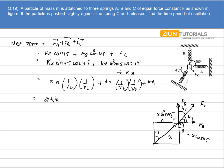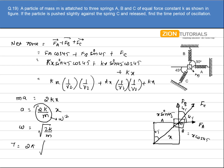This net force equals mass times acceleration, so acceleration = (2K/M) · x. Since acceleration is directly proportional to x, the coefficient of x equals ω². Therefore ω = √(2K/M), and the time period comes out to be T = 2π√(M/2K). That is the answer.